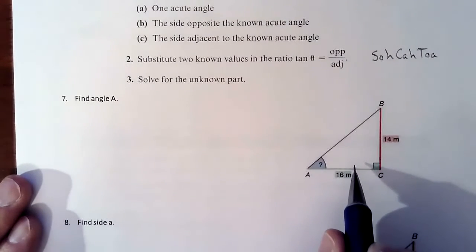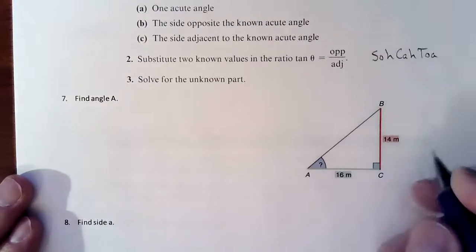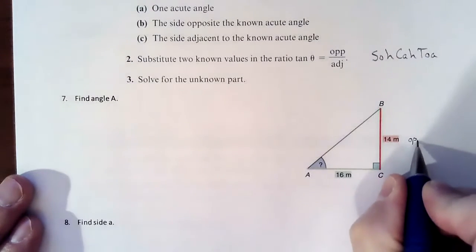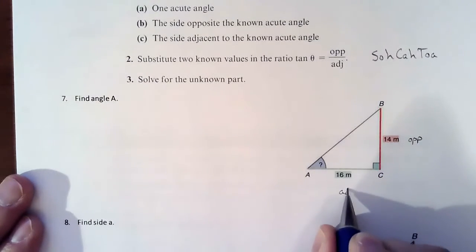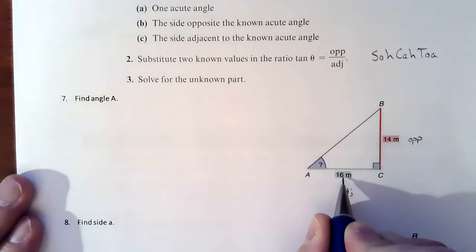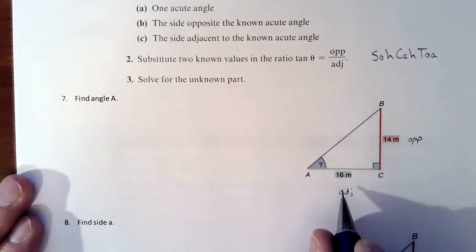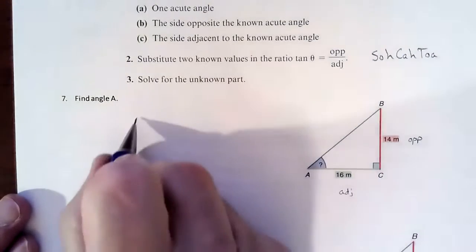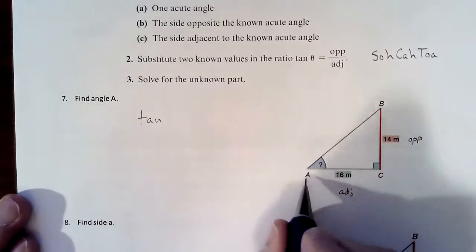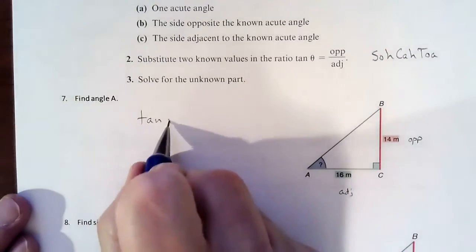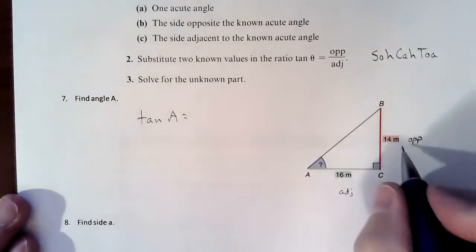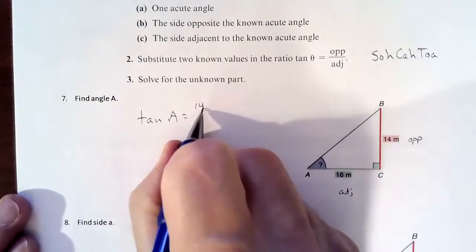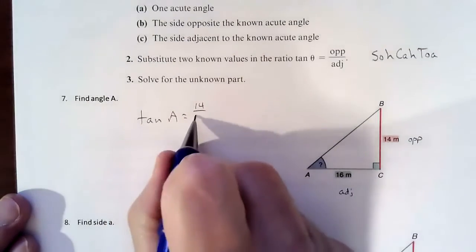For example, this picture right here. Here's our angle. Here is our side. That one's opposite. This is the adjacent to the angle. So those are the two pieces of information we have from this angle that's telling us that we need to set up our equation as tangent of an angle, which we don't know, is going to be opposite, which is 14, over adjacent, which is 16.